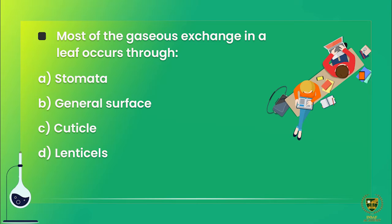Next MCQ: most of the gaseous exchange in a leaf occurs through — yahaan par do cheezon ko consider karna hai: 'most' aur structure. Option D says lenticels — yeh bark mein hoti hain, leaf mein nahi. Option C says cuticle — yeh wax ki layer hai leaf ki upar, lekin most gaseous exchange cuticle se nahi hoti.